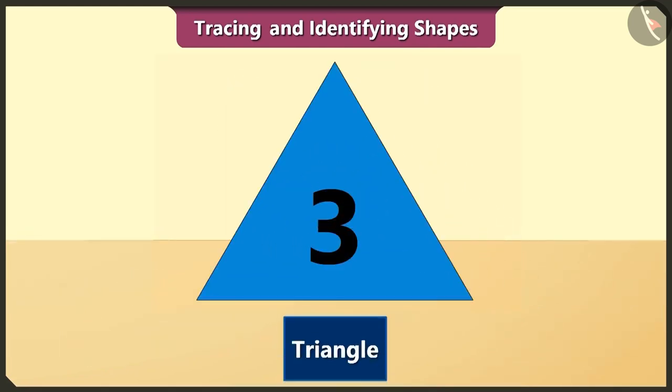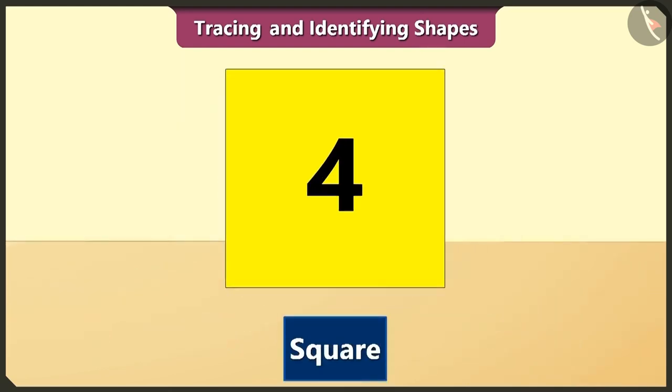The triangle is third in order. A triangle has three sides. The square is fourth in order. The length of all its four sides are the same.